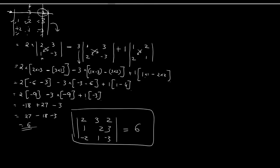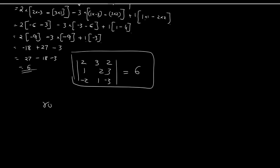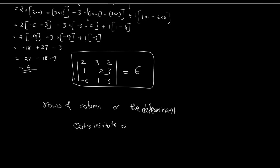So this is how you solve a third order determinant. In the next lecture, we are going to study about how to do certain operations on rows and columns of the determinant. I hope you understood. Thank you. If you liked our lecture, please share it with colleagues and friends, ask questions in the comment section below, or email us at oatesinstitute@gmail.com. Please hit the like and subscribe button. See you next time.